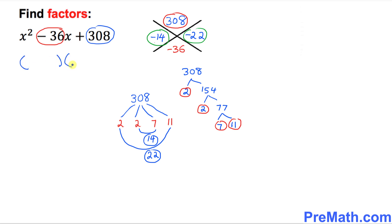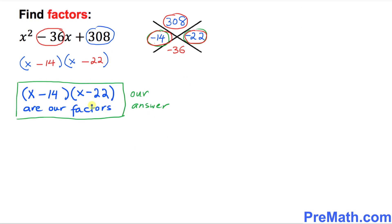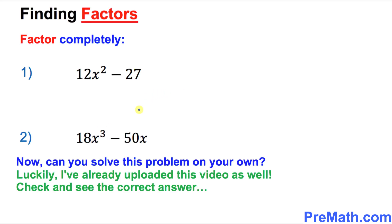Write down two parentheses with X and X. One factor is negative 14 and the other is negative 22. So our final answer is (x − 14)(x − 22).